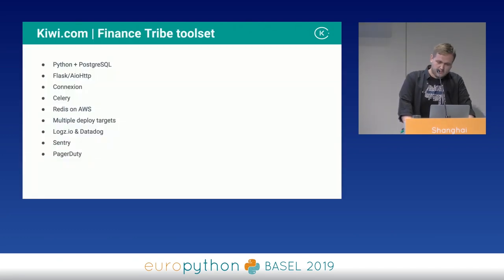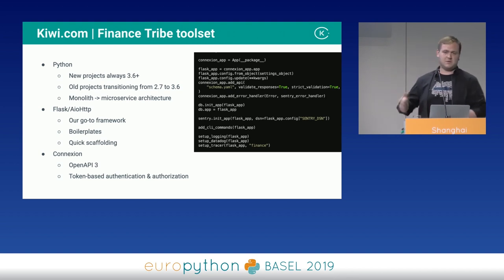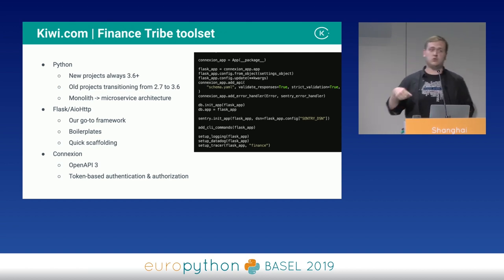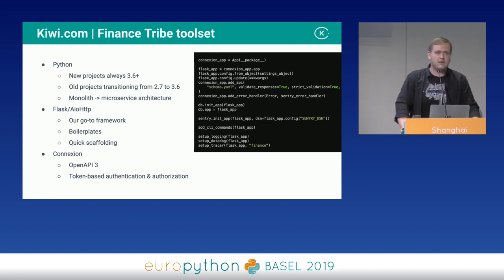That's how Fantozzi was developed as well. With Python, we're always trying to shift to Python 3.6 or newer — usually 3.7 now. We're also trying to break everything down from monolithic to microservice architecture, using task queues and asynchronous processing.